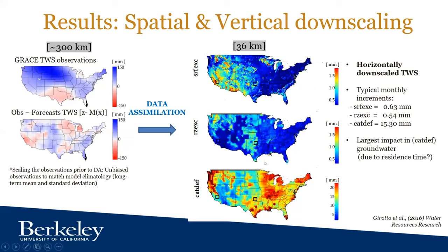Looking at the scale of increments in the three layers, most of the increments are coming in the bottom layer — the one the model uses to predict groundwater. This is linked to GRACE having a monthly temporal scale. Surface and root zone soil moisture have a much more dynamic temporal behavior, so a long-timescale observation like GRACE is more beneficial for updating something with a slower temporal dynamic like groundwater.